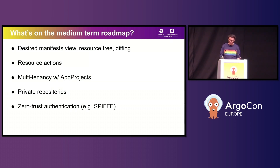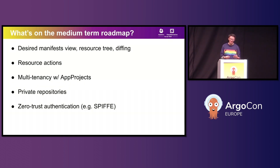We've also found that people really love resource actions — things like re-rolling out deployments, deleting a stray resource, or any custom resource action you've implemented — and that's definitely coming soon as well. After that we'll be focusing on the multi-tenant experience. Right now we sync all app projects to all of the agents, and since app projects are usually used for governance purposes this is not optimal for most use cases. So one thing we're working on is finding a way to selectively sync app projects just where they're needed. The same goes for private repositories, which are not supported as of now but we really want to support them in the future.